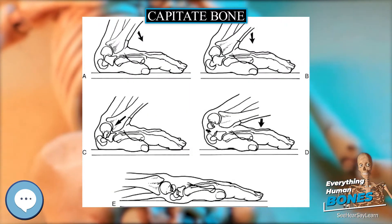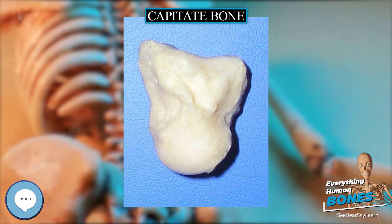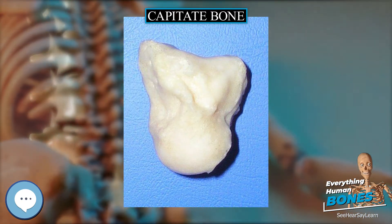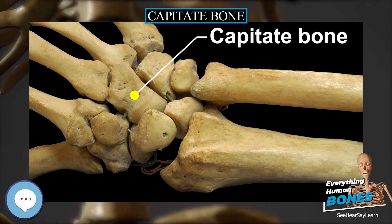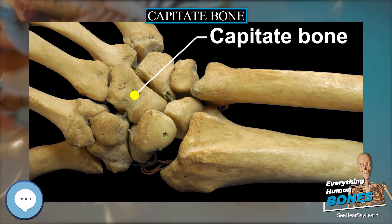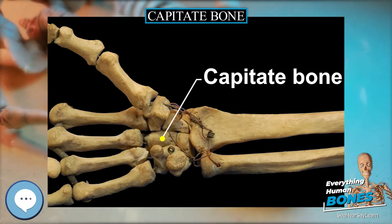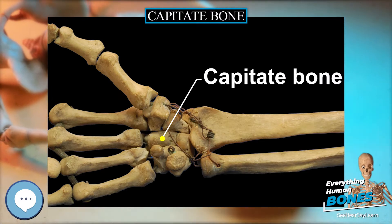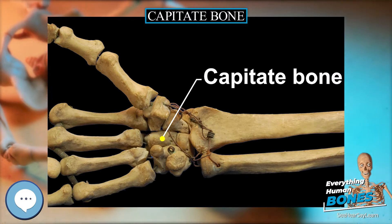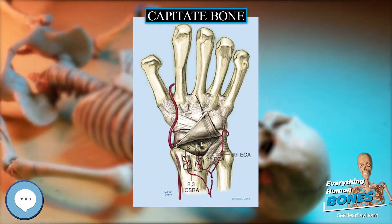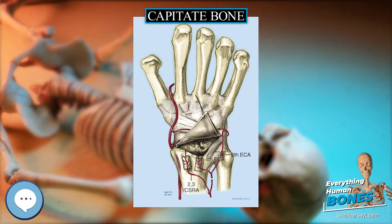The capitate is the largest carpal bone found within the hand. It is found within the distal row of carpal bones. The capitate lies directly adjacent to the metacarpal of the ring finger on its distal surface, has the hamate on its ulnar surface and trapezoid on its radial surface, and abuts the lunate and scaphoid proximally.